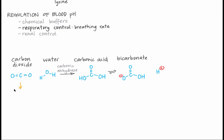Breathing more means exhaling more carbon dioxide, which decreases carbonic acid concentration. Because the ratio of carbonic acid to bicarbonate stays around 1 to 10, a decrease in carbonic acid causes bicarbonate and H+ to come back together, forming carbonic acid and returning to that ratio. This decreases the bicarbonate and H+ concentrations. Decreasing H+ means less acidic, and thus an increase in pH. Breathing less has the opposite effect, increasing H+ and decreasing pH.